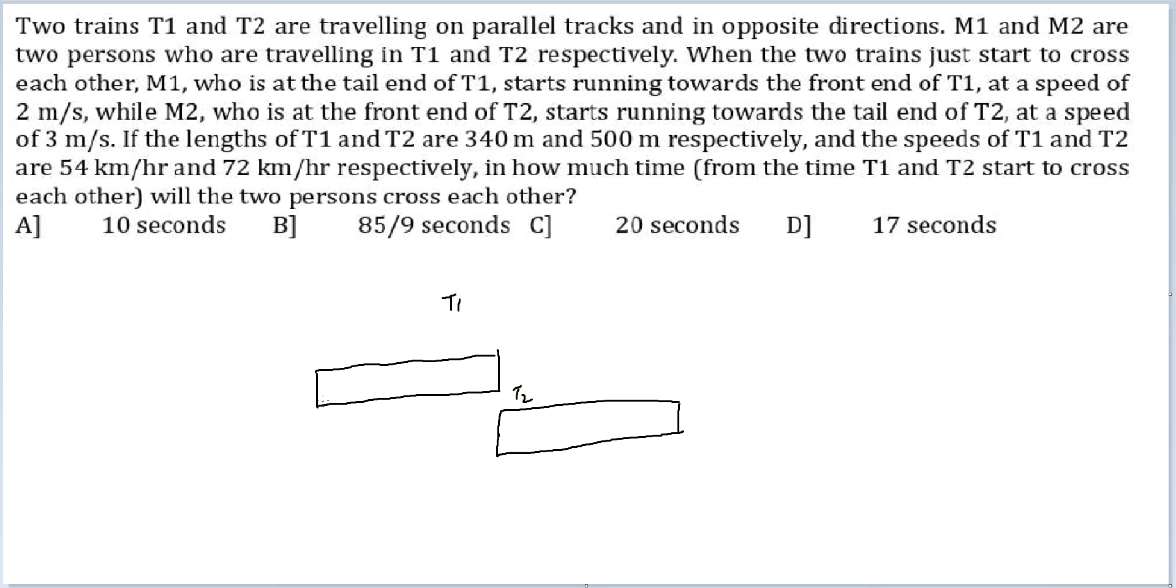M1 is at the tail end of T1. So M1 is here. Starts running towards the front end of T1 at the speed of 2 meters per second. He is running at the speed of 2 meters per second. While M2 is at the front end of T2. So M2 is here. He starts running towards the tail end of T2 at the speed of 3 meters per second.